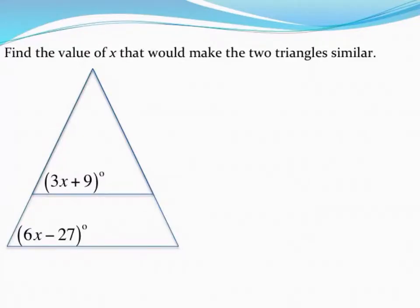In this example, we want to determine the value of x that would make the two triangles similar to each other. We've been learning that if two triangles are going to be similar, it means all their angles have to be the same.